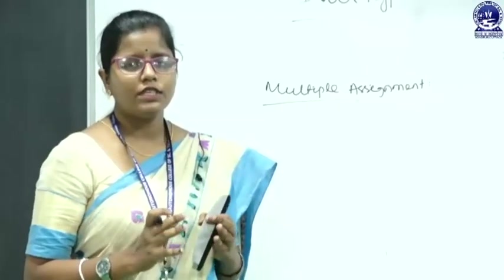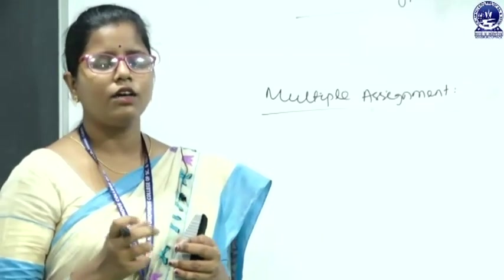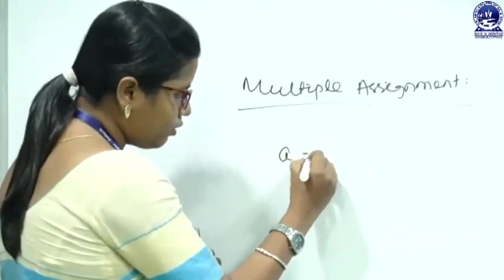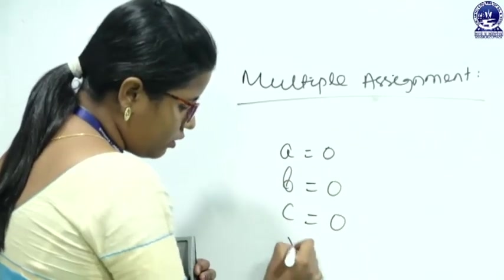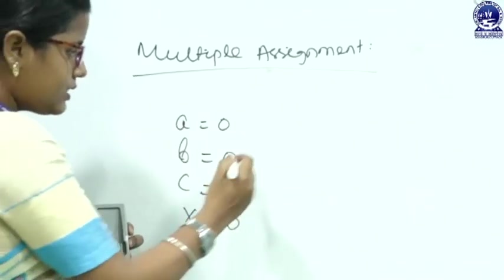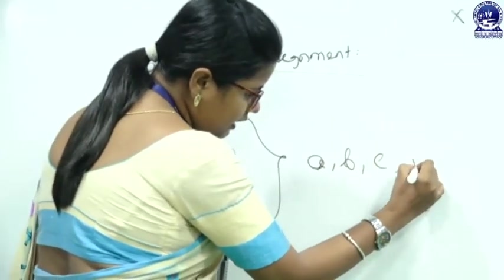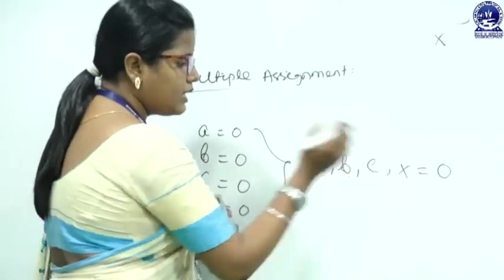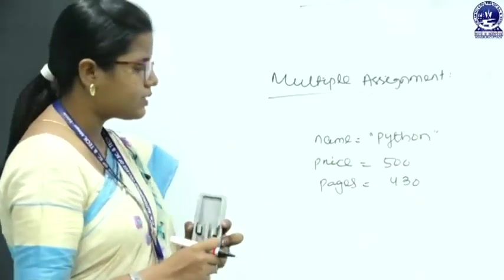Another feature in Python programming language is that in a single line we can assign multiple values to multiple variables. For example, instead of writing a equals to 0, b equals to 0, c equals to 0, and x equals to 0 on four separate lines, we can write a comma b comma c comma x equals to 0. That means all the variables a, b, c, and x will be assigned the integer value 0.